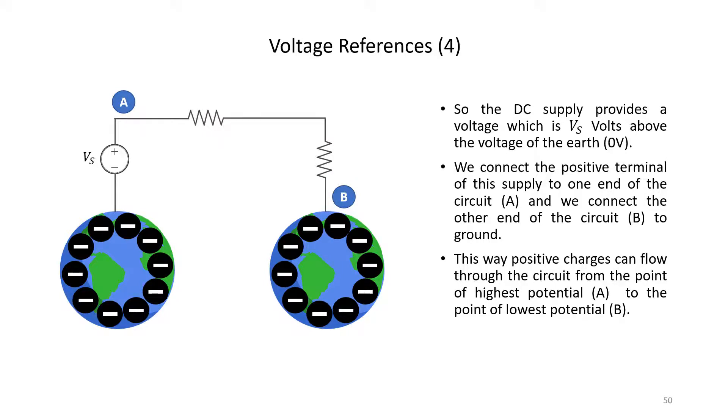This way, the charges which are at the positive terminal of the power supply which have got a lot of potential energy will have a point of lower potential which they will flow to, and as they do so they will traverse our circuit and our resistors.